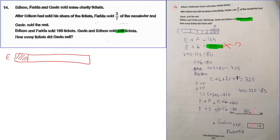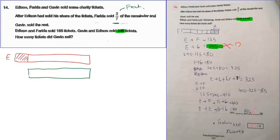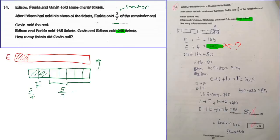It says Farrah sold two over seven of the remaining. I always tell you to draw this so you have a clear idea. This portion is a fraction of the one above, so I cut into seven parts. Over here, Farrah's portion is two over seven, and the remaining is five over seven — that belongs to this other person.